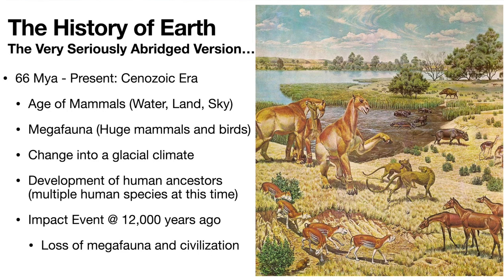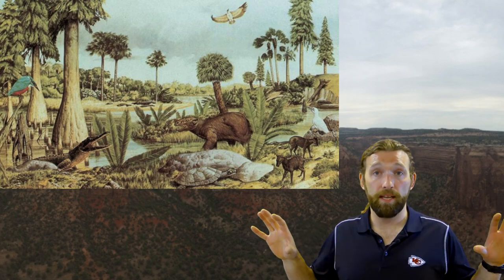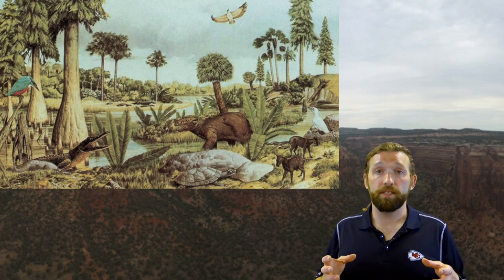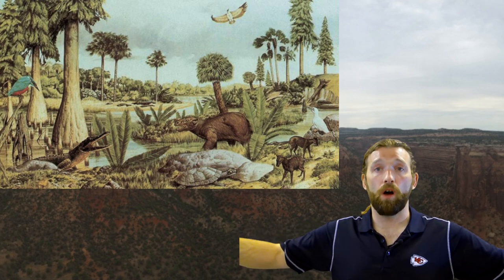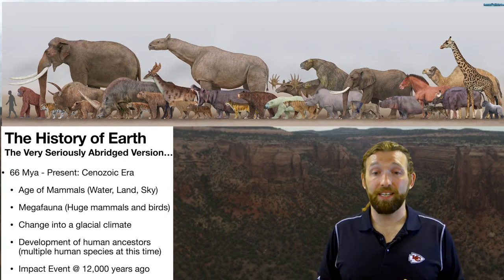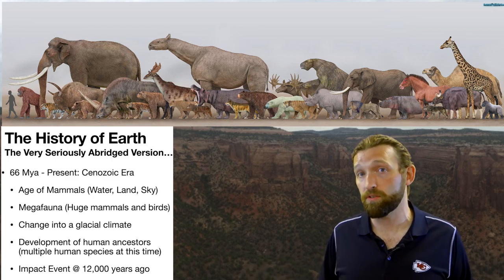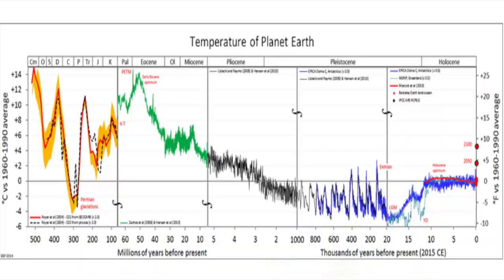That gets us into the Cenozoic period — more or less the Age of Mammals. Mammals take to the land, the sky, and the ocean, filling every ecosystem niche left behind by the now-extinct dinosaurs. Life again spreads out everywhere and evolves rapidly to fill all these new niches. We start getting megafauna once again — things like giant camels, woolly mammoths, giant sloths, and short-faced bears — all living here up until just 10,000–12,000 years ago.